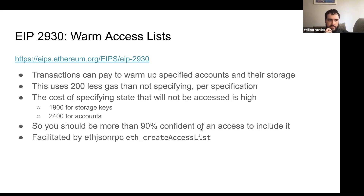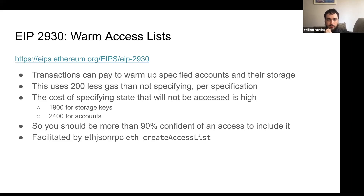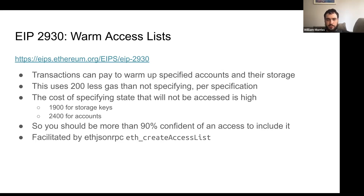EIP 2930 allowed transactions to specify access lists. This was included in Berlin. It introduced transaction type one, and this feature is still available with EIP 1559 transactions, transaction type two. In both of them, you can specify an access that you're anticipating, and assuming that it happens, you'll save gas. Of course, if it doesn't happen, you'll waste gas. So you should only use this for accesses that you believe with 90 percent confidence or more that you're planning to access that storage.